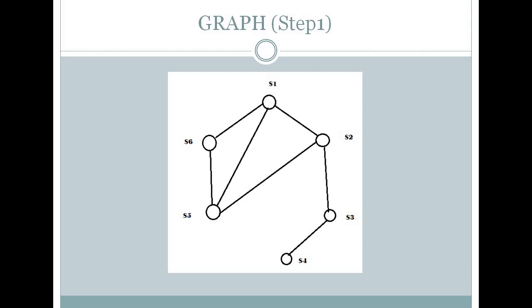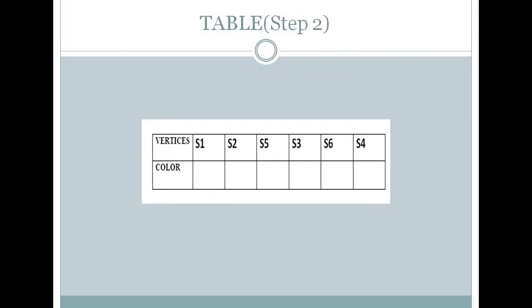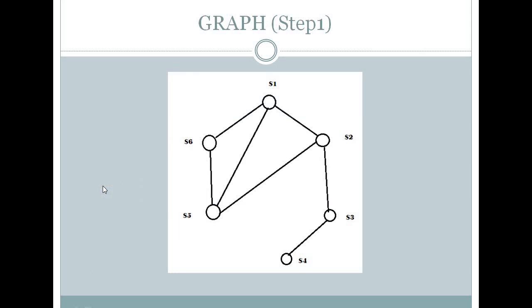I have connected edges between the vertices which are less than 150 kilometers so that they could use the same channel. S1 is connected to S2, S1 is connected to S6 and S5, and similarly all the vertices are being connected according to their distance between them. Step number one is making the graph. Then next step is to arrange all the vertices in descending order. S1 is adjacent to S2, S6. S5 is adjacent to S6, S1, S2. S3 is adjacent to S2, and S3 is also adjacent to S4 according to that graph.